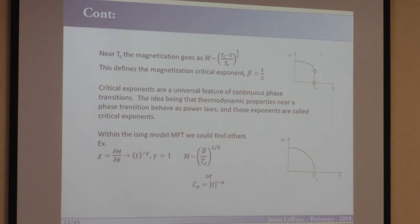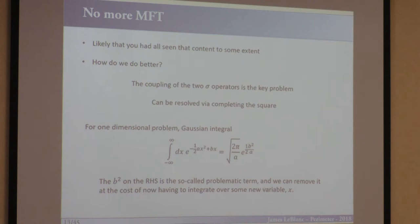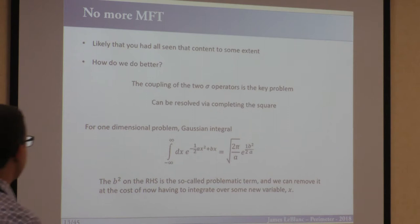Within the Ising model we could find the other critical exponents for the susceptibility (gamma) and the specific heat, but I'm not going to do that — you can look them up. My goal is not really to do mean field of the Ising model, but to step beyond that and push into things you haven't seen. This was the 15 minutes of content where you think 'yeah, I've seen that.'